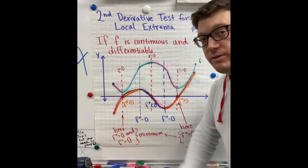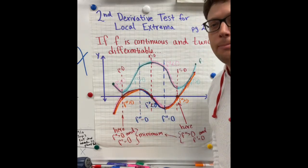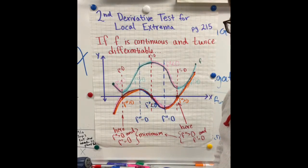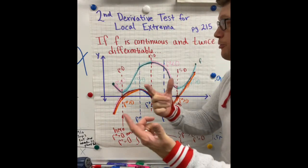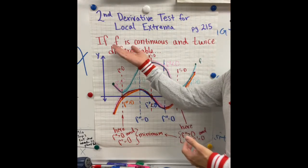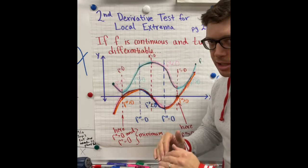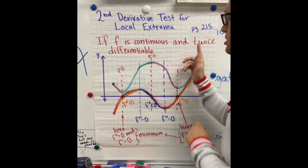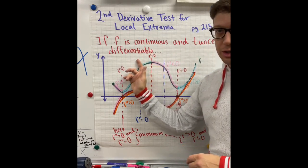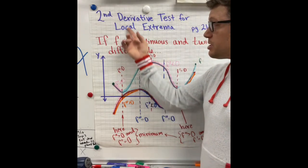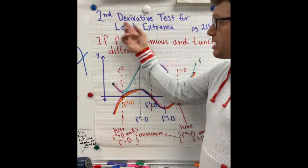But here you are watching the second derivative test, and there are a couple of conditions we have to establish. First of all, the function we're looking at has to be continuous and twice differentiable. If it's the second derivative test, you better be able to take the second derivative of the function.